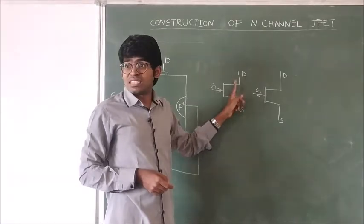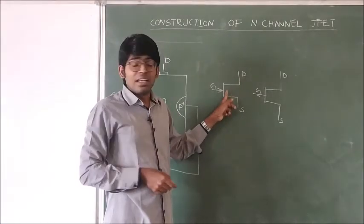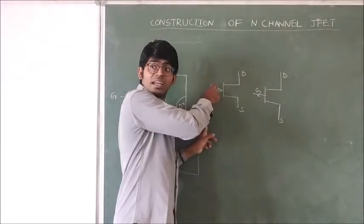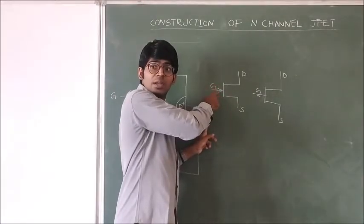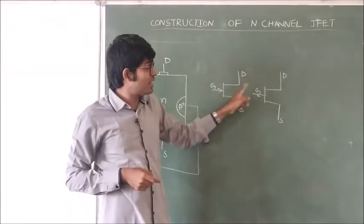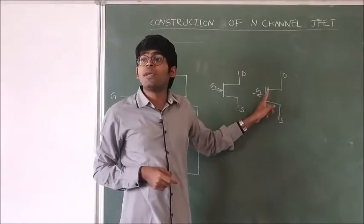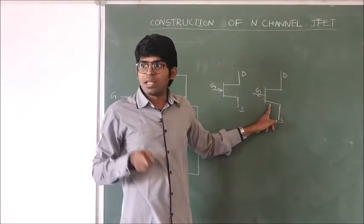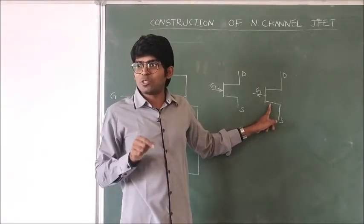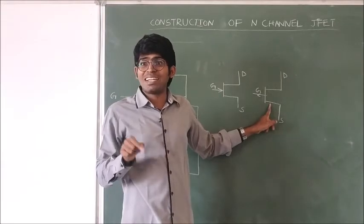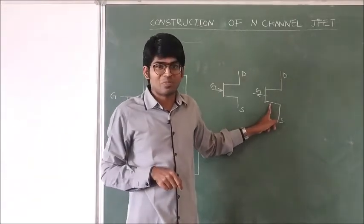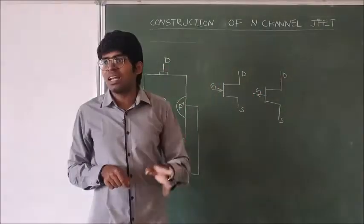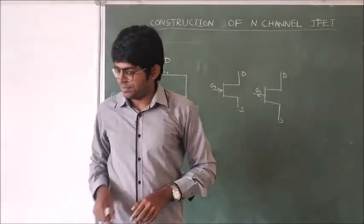This is the JFET circuit symbol. The arrow direction indicates the gate terminal. This is an N-channel JFET symbol and this is a P-channel JFET symbol. In the BJT, the arrow symbol is represented at the emitter. This is the construction of the N-channel JFET.